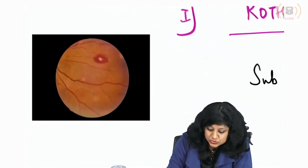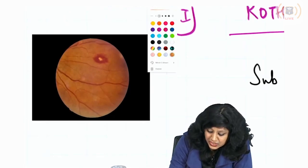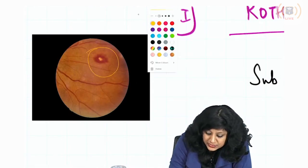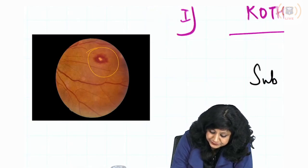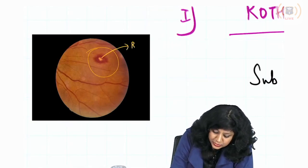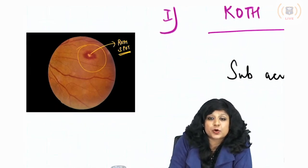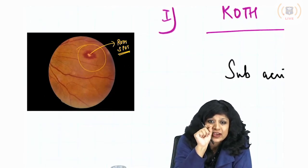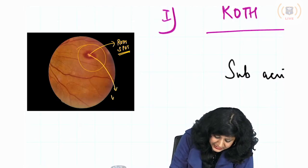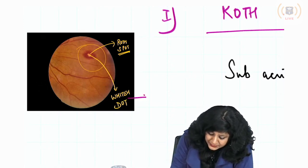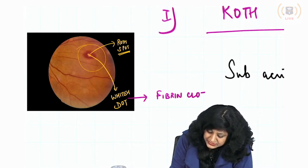This is actually a Roth spot — how a Roth spot looks like. This is a single Roth spot. So a Roth spot has a single hemorrhage and a whitish dot in the center. This whitish dot actually represents the fibrin clot.